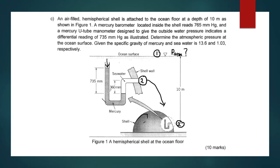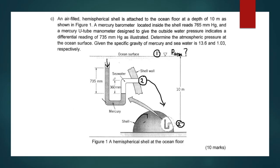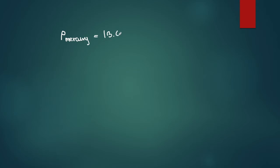The U-tube manometer will read the pressure difference between the shell inside pressure and point number 2. Now we have to calculate the densities. Because this question gives us specific gravity values, we need to convert them into density. The density of mercury is 13.6 × 1000 = 13,600 kg/m³.